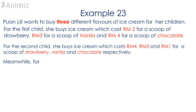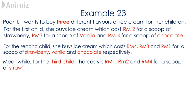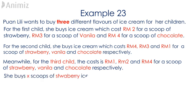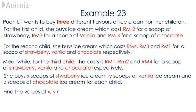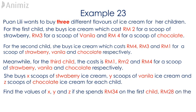For the third child, the cost is RM1, RM2 and RM4 for a scoop of strawberry, vanilla and chocolate respectively. She buys X scoops of strawberry ice cream, Y scoops of vanilla ice cream and Z scoops of chocolate ice cream for each child. Find the values of X, Y and Z if she spends RM34 on the first child, RM28 on the second child and RM27 on the third child.